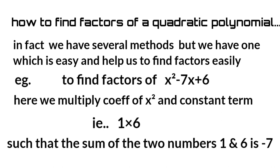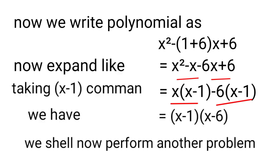Now we write the polynomial as x² - (1+6)x + 6 = x² - x - 6x + 6. Expanding and taking common factors: x(x-1) - 6(x-1) = (x-1)(x-6). We shall now perform another problem.